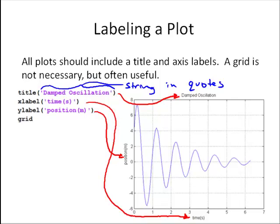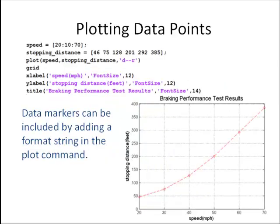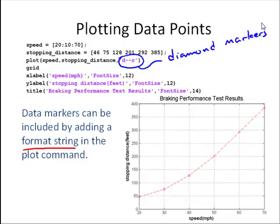So simple enough to create a basic plot. Sometimes, instead of plotting a function where we want a nice smooth line, we might be plotting some data, for example experimental data. We can also do that with the plotting function. Here's an example from some tests of braking performance. In this case, the way that we can plot those data points is by adding a format string in the plot command. Here's our format string in the plot command. What that's saying is we want that plot to use diamond, the D stands for diamond markers, data markers. And the double dashes there mean that we're going to have a dashed line. And the R means it's going to be red. And so we get a plot with a dashed line and it's red.